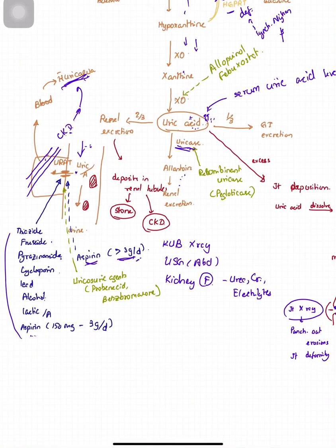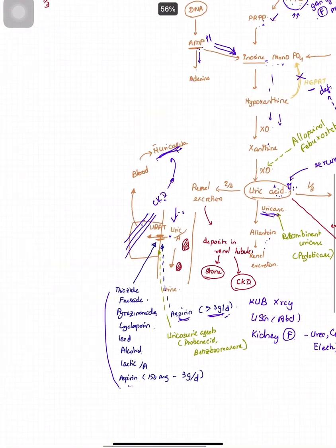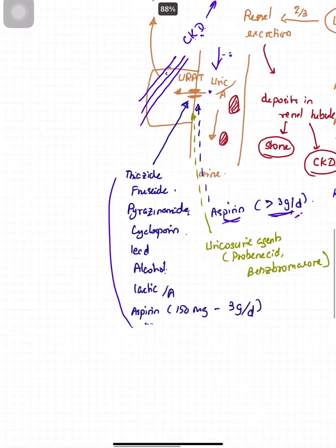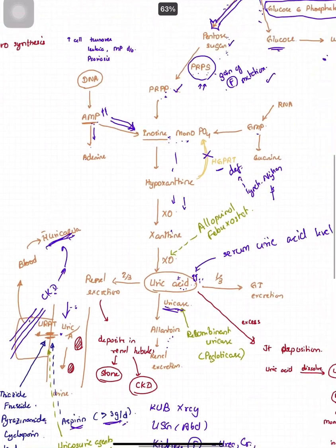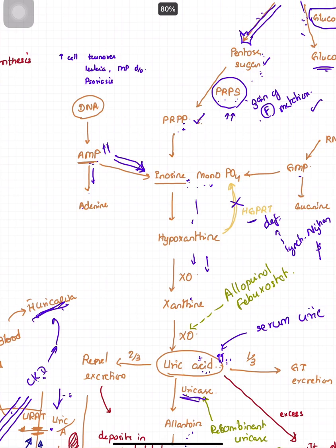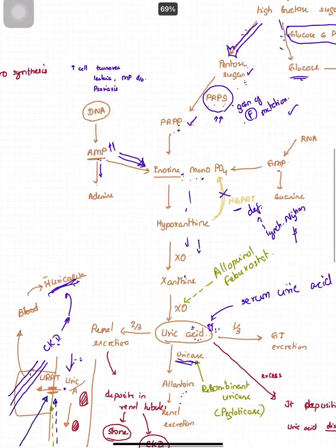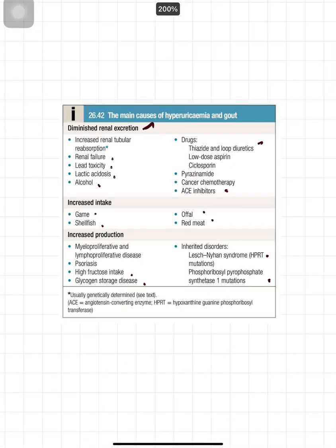In CKD, whatever the cause, there will be reduced GFR and reduced uricosuric effect, so less uric acid goes into the urine. CKD will also lead to hyperuricemia. To summarize the risk factors: these include renal causes such as CKD, certain drugs and chemicals, aspirin at low dose, enzyme deficiencies, dietary factors, and increased cell turnover diseases.